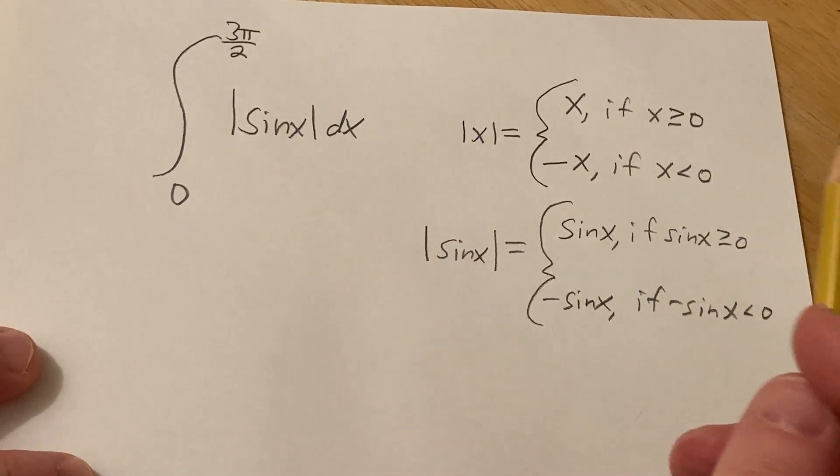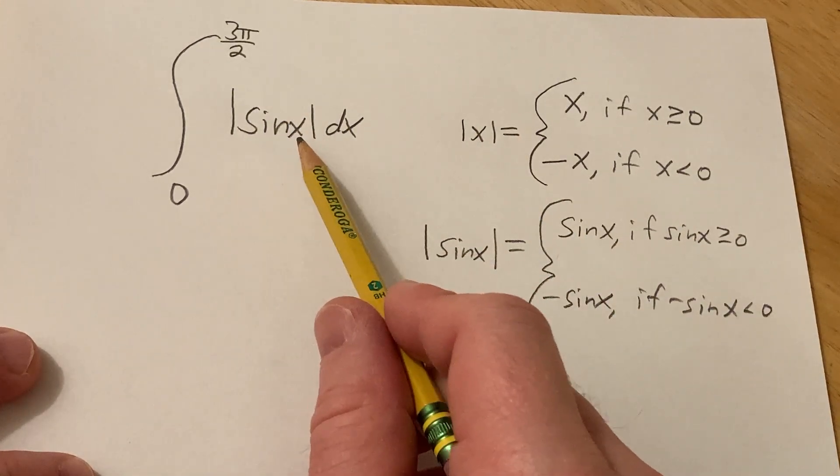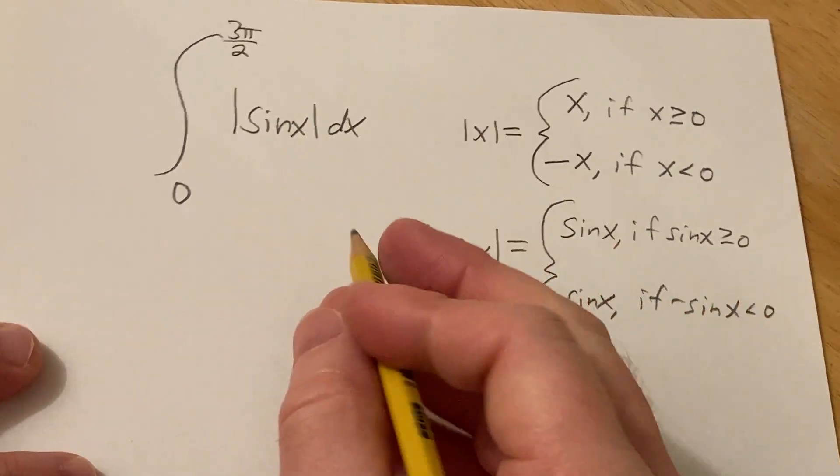So this might seem intimidating, but it really isn't. There's a couple ways to do it. You can think about the unit circle, or you can think about the graph of sine. I'm just going to think about the graph of sine.